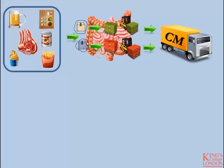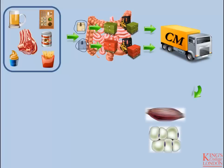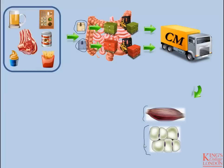Once these lipids have been packaged into the chylomicron, they are sent out through the circulatory system via the lymphatic system to the various tissues — illustrated here by muscle and adipose tissue. Think of the individual cells in these tissues as individual points of delivery for the products contained in this lorry.